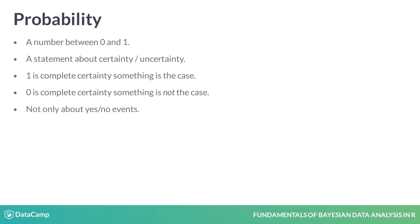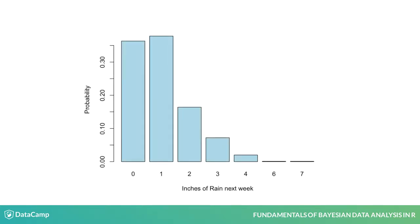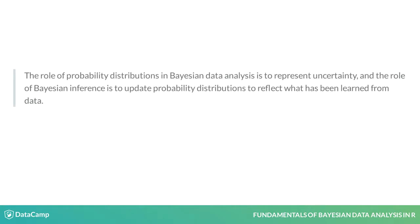Probability does not only have to be about yes-no type of events, but it can also be used to describe uncertainty over continuous quantities. For example, here is a graph showing the probability over how many inches it will rain next week. Each bar shows the probability for the corresponding outcome and together the probabilities sum to one. This graph is also an example of a probability distribution, which is just an allocation of probability over many mutually exclusive outcomes.